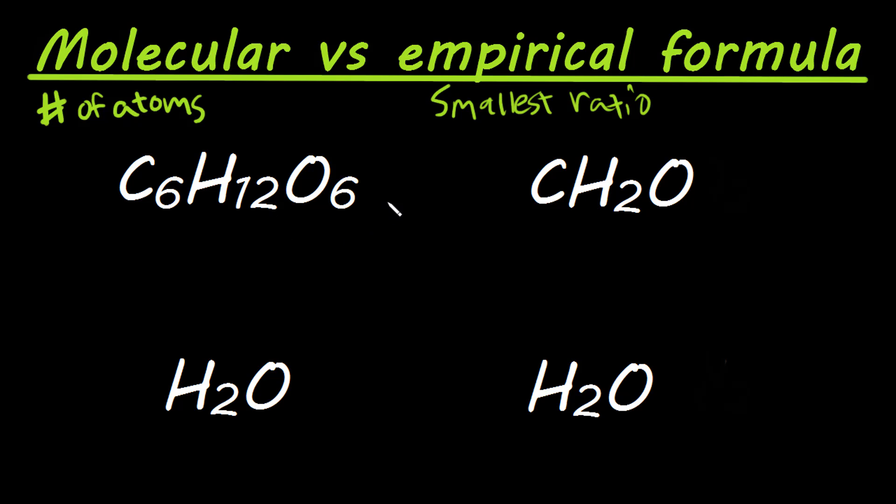And so an easy way to remember this is that empirical starts with an E. Empirical starts with an E, so this is like the easiest or the simplest, simplest formula. So it has the smallest and simplest ratio of those atoms together that make up this molecule.